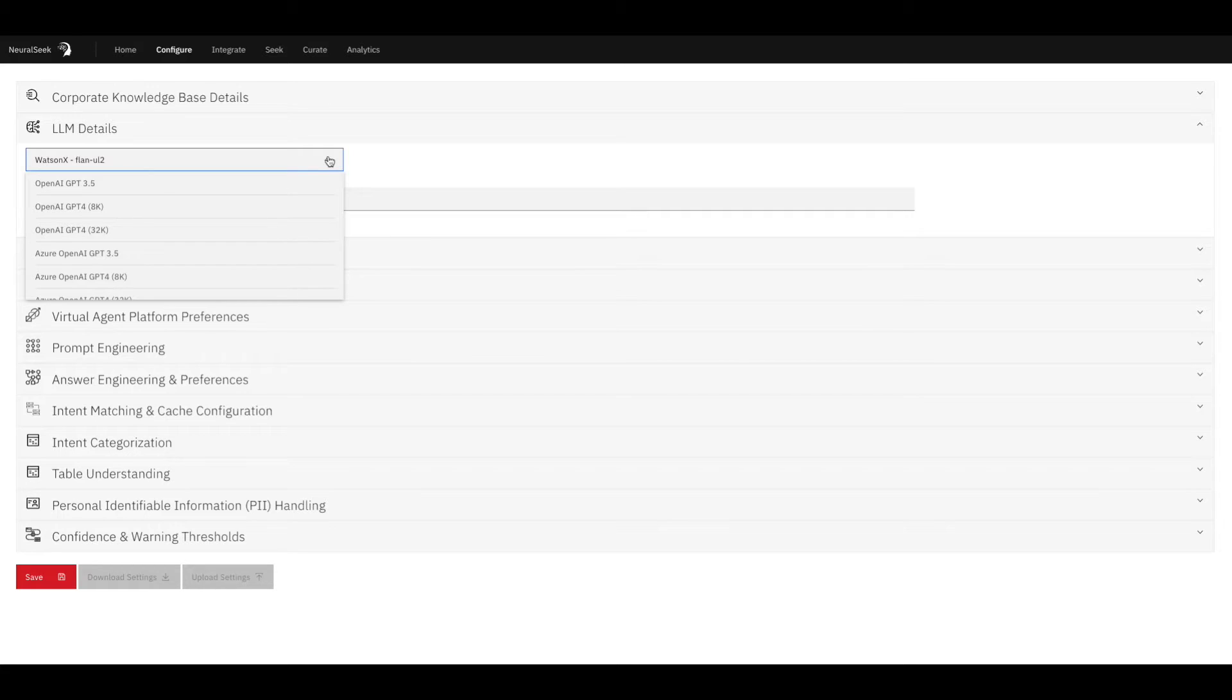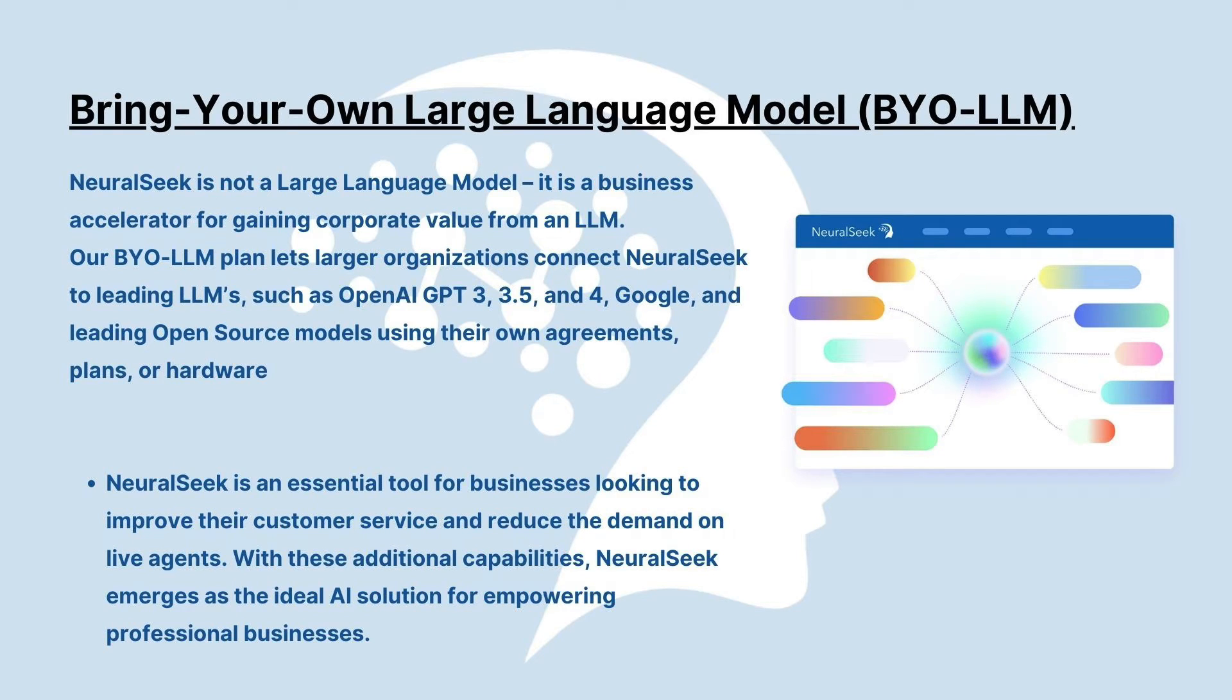This plan lets larger organizations connect NeuralSeek to leading LLMs such as OpenAI GPT-3, 3.5, and 4, Google, and leading open source models using their own agreements.